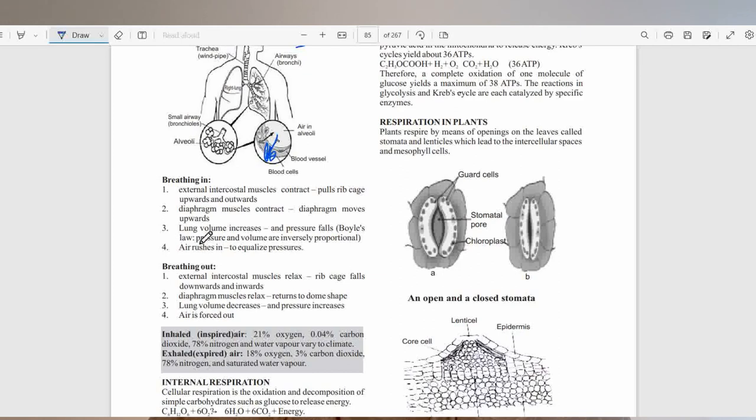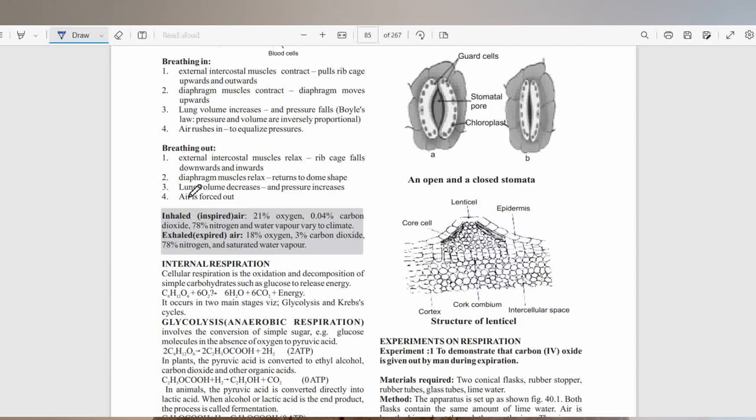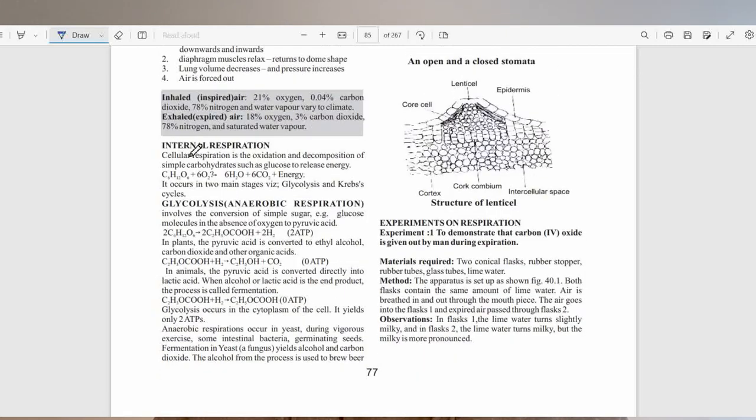During breathing out, it's the exact opposite. The external intercostal muscles relax, the ribcage falls downwards and inwards. Diaphragm relaxes, it returns to the dome shape. The lung volume decreases and the pressure increases, and this forces the air out of the lungs.